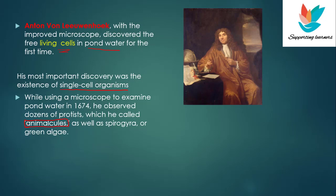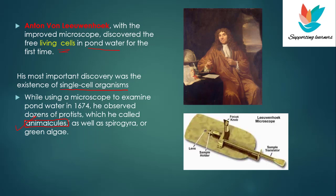What we know today as bacteria, protists, or algae — at that time those terms were not there, so he named those organisms he was observing as animacules. He designed about 500 microscopes.